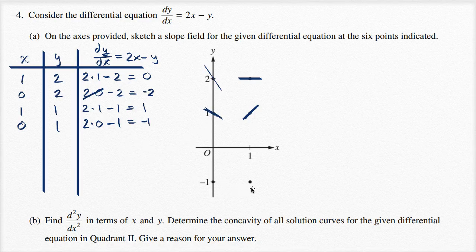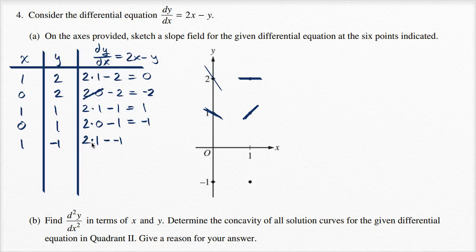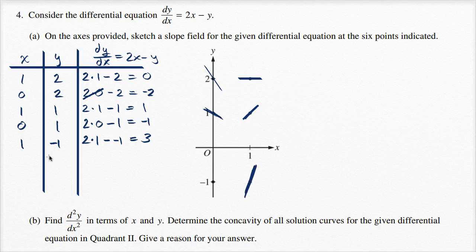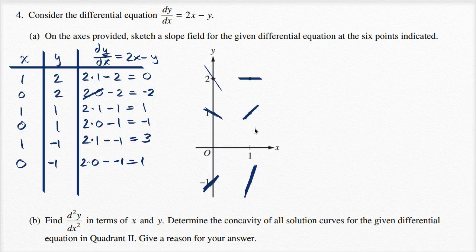Then x is one, y is negative one: it's going to be two times one minus negative one, so two plus one — this is equal to positive three. The slope is even steeper, but now in the positive sense. Finally, x is zero, y is negative one: two times zero minus negative one equals a slope of one, which should be parallel to what we have right over there. And we're done.